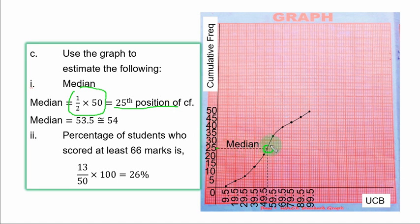This is the point of intersection. And you trace to the upper class boundary axis. And you have this point.